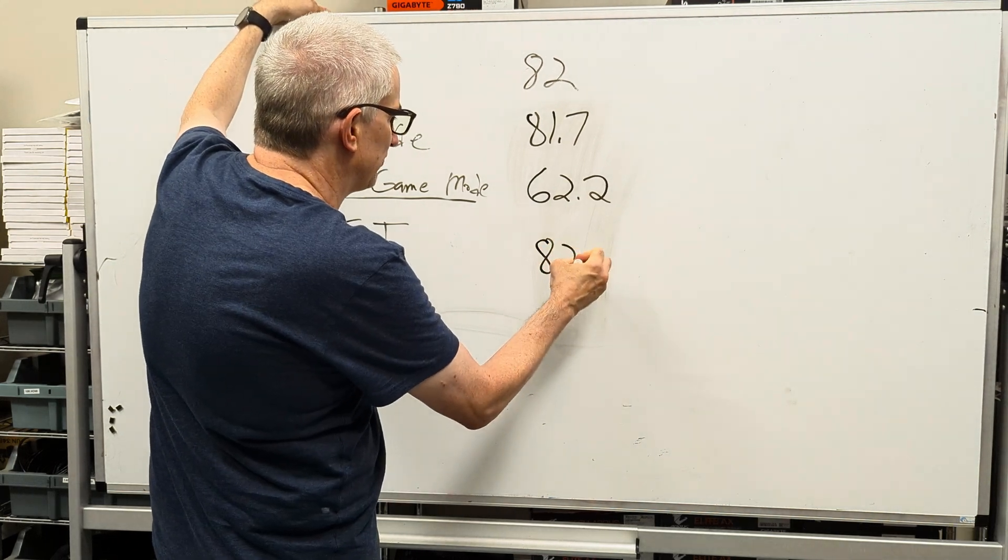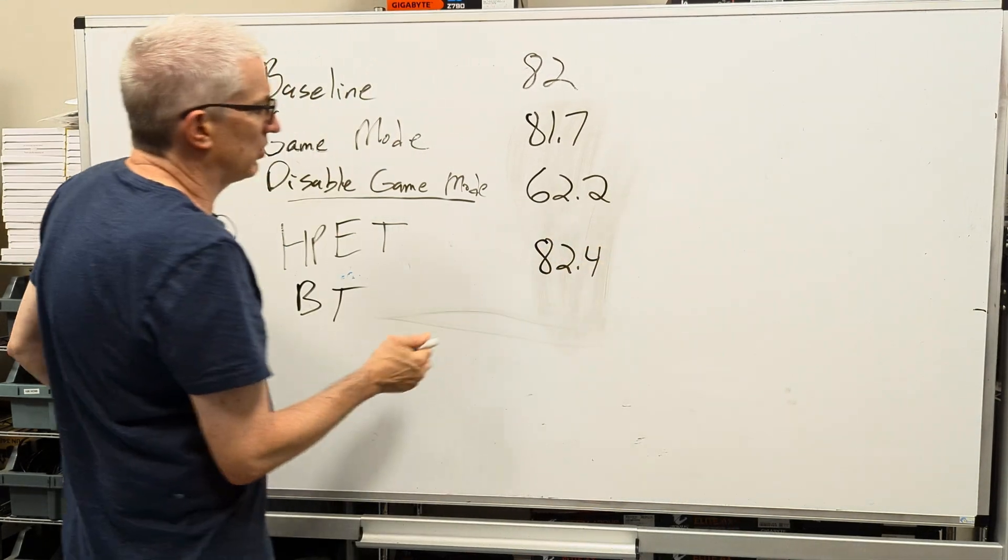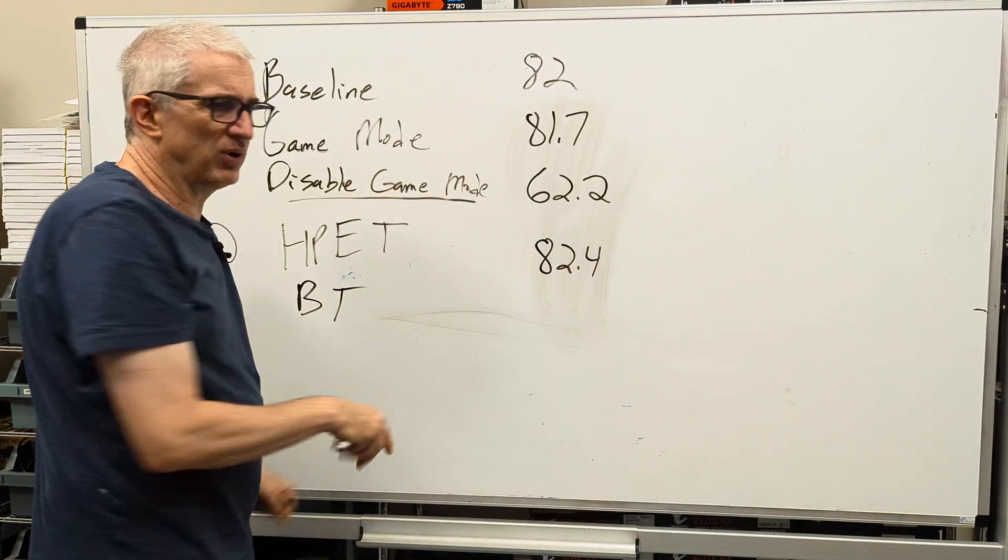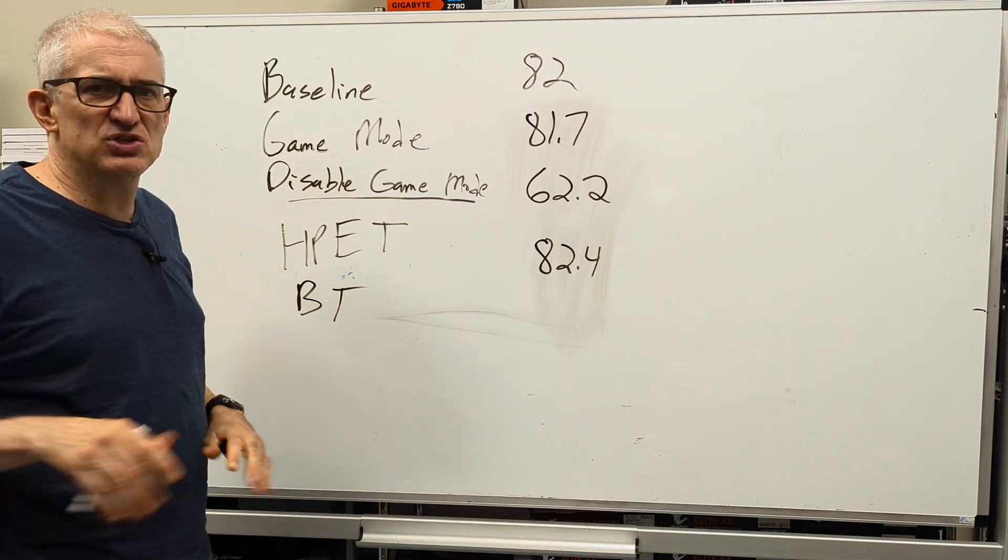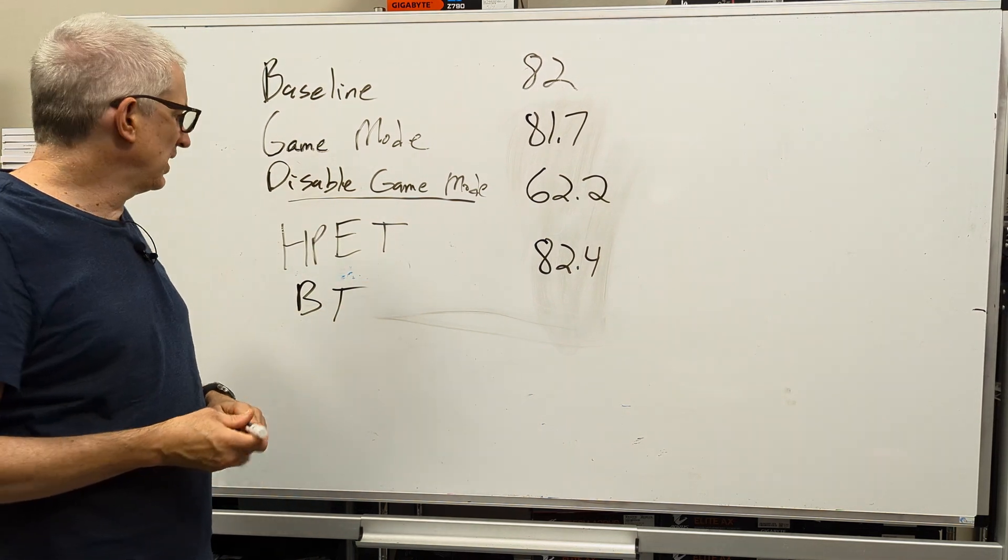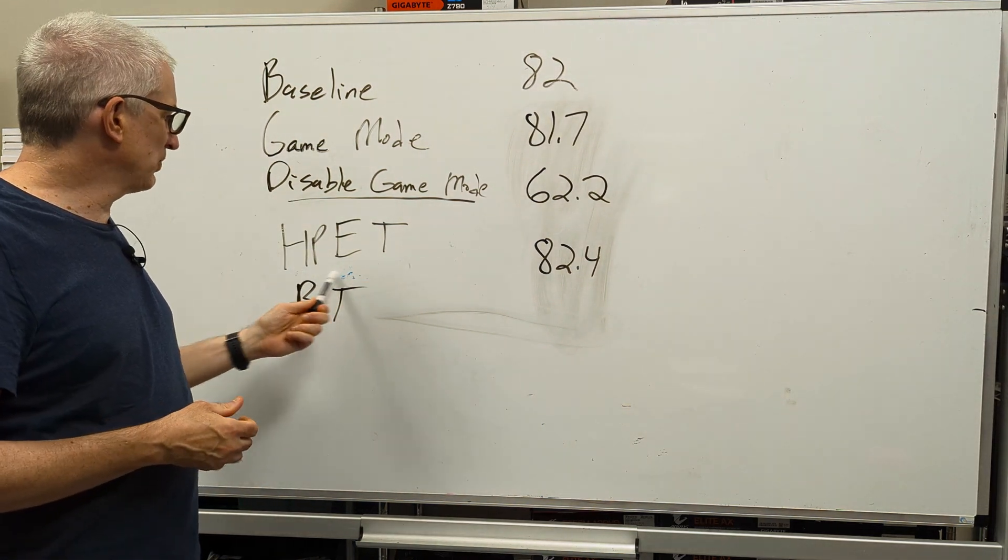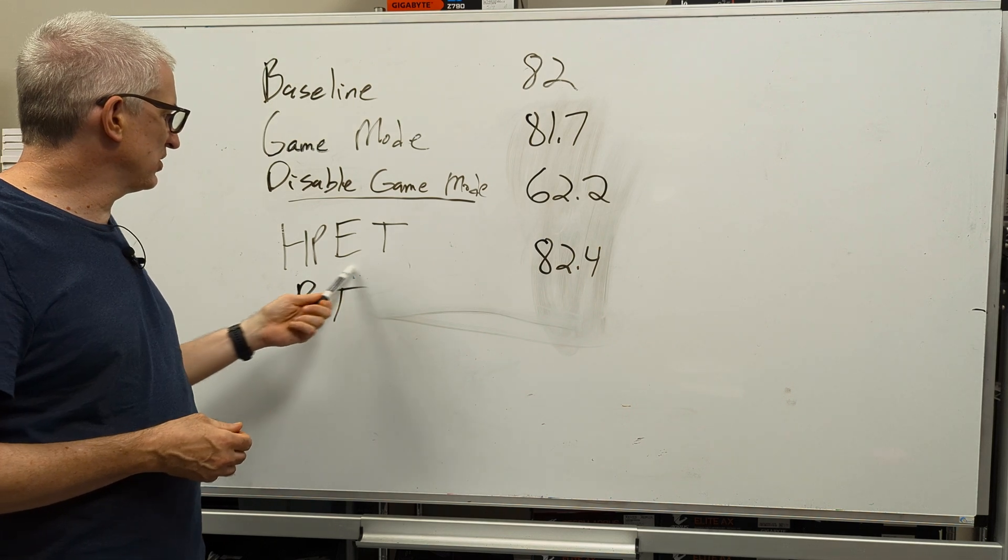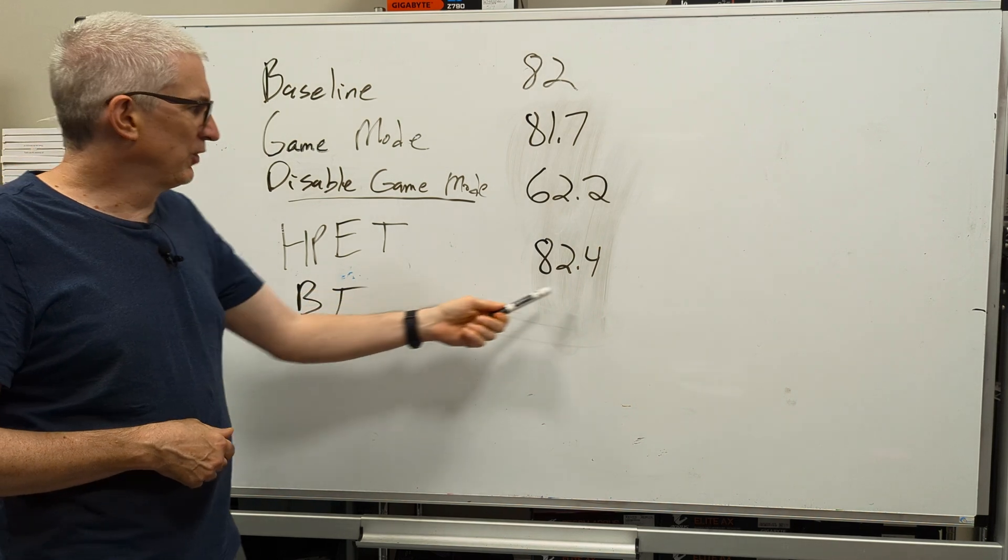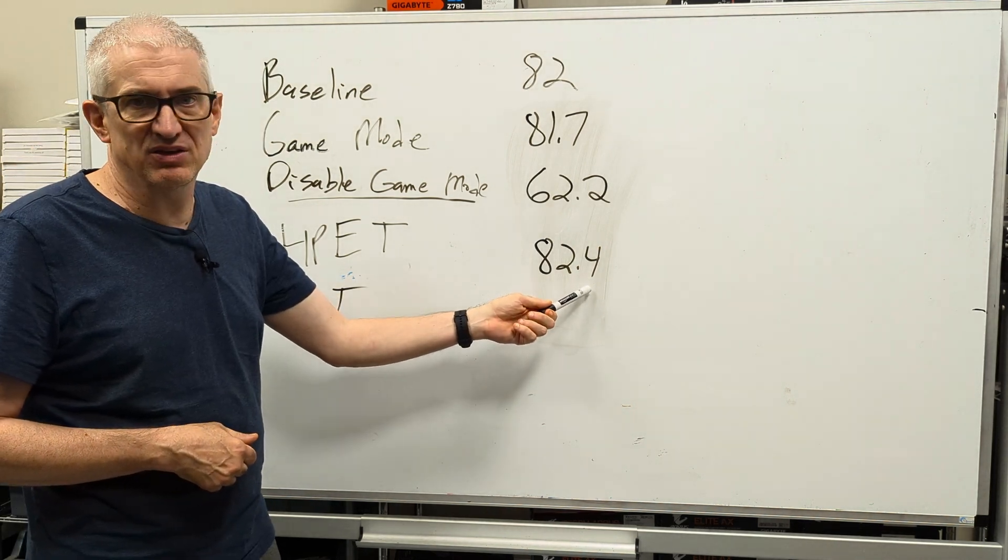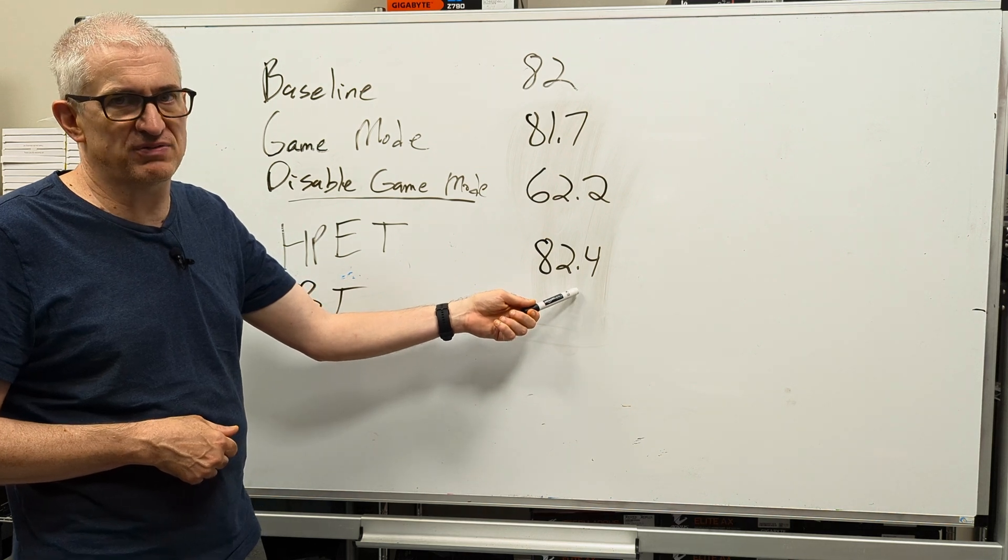Let's see, I got 82.4. So 82, 82.4 insignificant, probably just a run-to-run variance. And why disable something, an essential Windows process for 0.4 if it's even this? I don't even think it is that. I think it's just a variance.